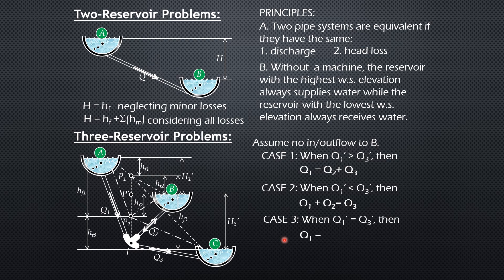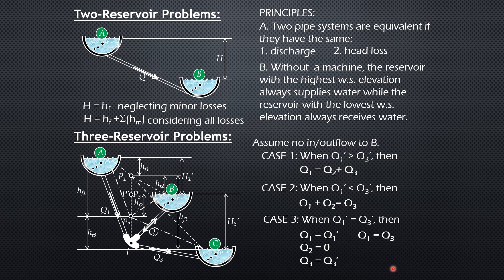Case 3: when q1' equals q3'. This is a very rare situation but can occur if intentionally designed. The piezometric level is really at P prime, so there is truly no inflow or outflow to B. In this case, q1 = q1', q2 = 0, and q3 = q3'. There is no case 4 — those are the only three cases for the three-reservoir problem.